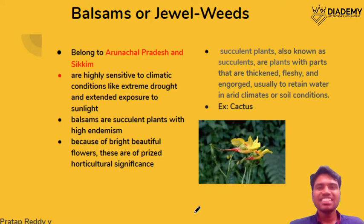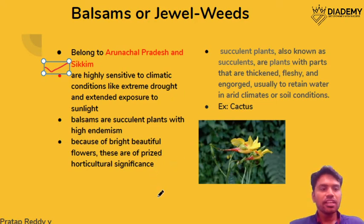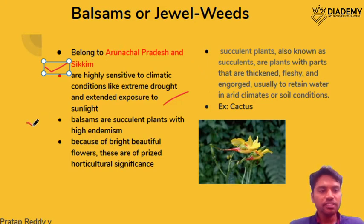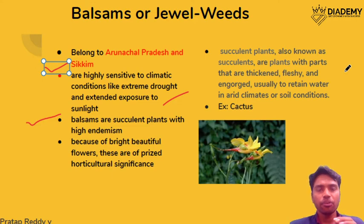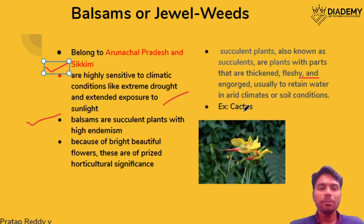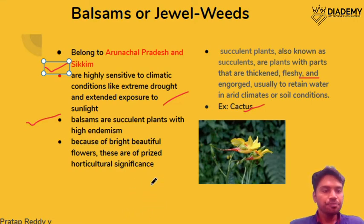Next is about balsams or jewel weeds, found in Arunachal Pradesh and Sikkim. These are very sensitive to climatic conditions like extreme drought or exposure to heat and sunlight. They are succulent plants — meaning they absorb and store water in their parts, having very few or no leaves, which makes them look thick and fleshy, like a cactus. They are important in horticulture because of their beautiful bright flowers.